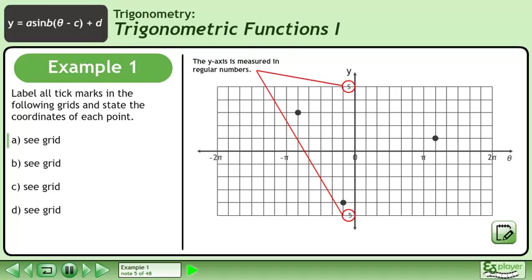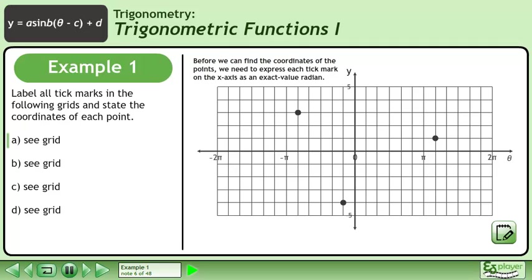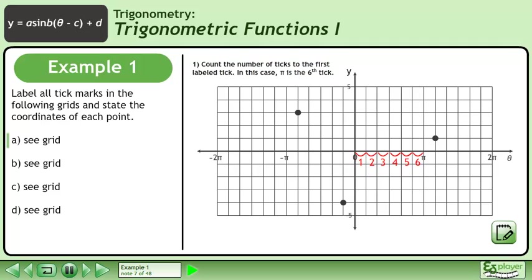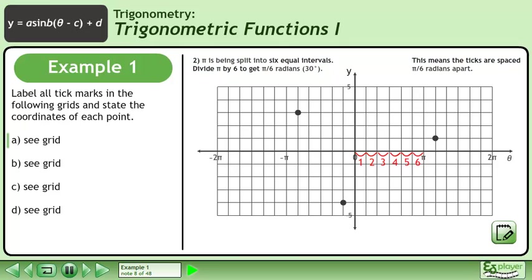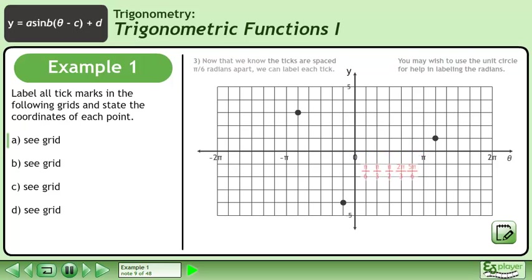The y-axis is measured in regular numbers. Before we can find the coordinates of the points, we need to express each tick mark on the x-axis as an exact value radian. The first thing we need to do is count the number of ticks to the first labeled tick. In this case, pi is the sixth tick. Pi is being split into six equal intervals. Divide pi by 6 to get pi over 6 radians, or 30 degrees. This means the ticks are spaced pi over 6 radians apart. Now that we know this, we can label each tick. You may wish to use the unit circle for help in labeling the radians.